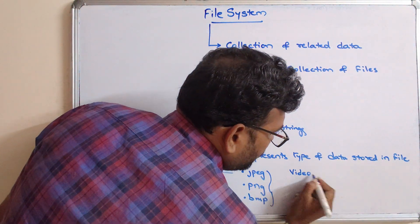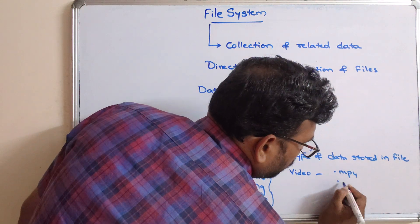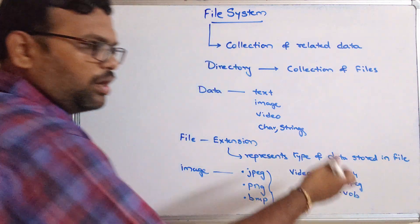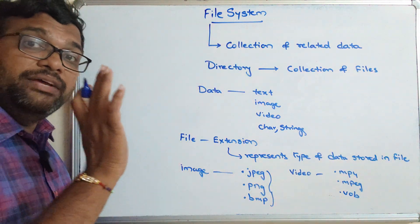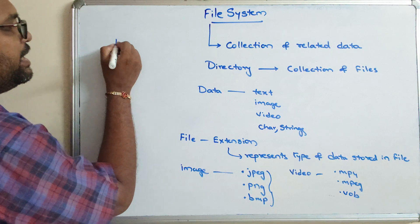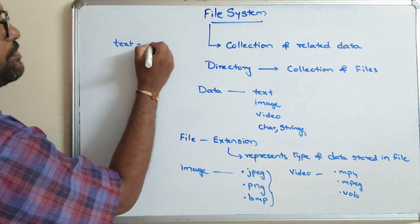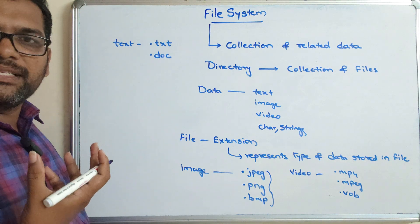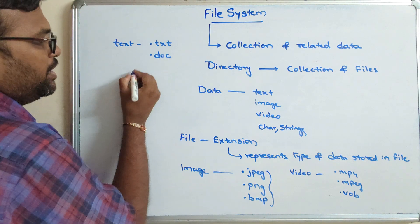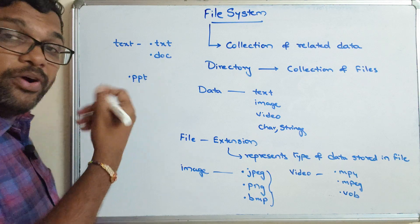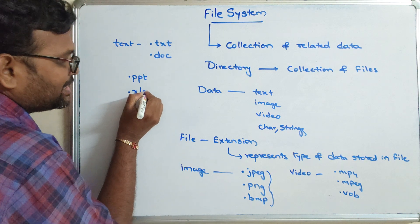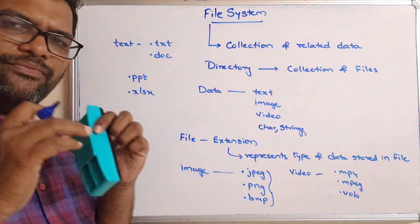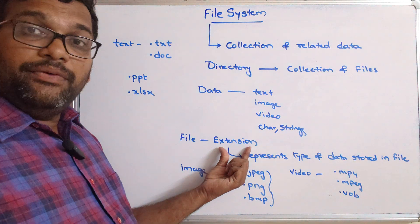For a video file, the extension would be .mp4, .MPEG, or .VOB, etc. These are different extensions which represent a video file. Similarly, for a text file, .txt or .doc. We also know .ppt which is a PowerPoint file, and .xls which is an Excel file. So for every file there will be an extension which represents the type of data stored in that file.